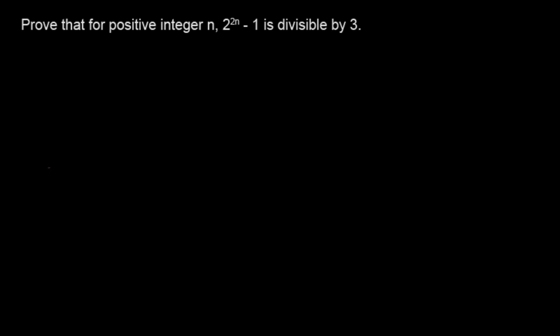Prove that for positive integer n, 2 to the 2n minus 1 is divisible by 3.